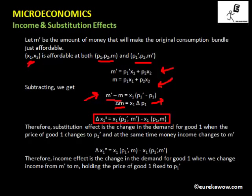The income effect is X1(P1 dash, M) minus X1(P1 dash, M dash). If you look at the Slutsky budget line and the final budget line, both are parallel to each other. As a result, the relative prices do not change — the price of good one remains at P1 dash and the price of good two is P2. However, income changes from M dash to M. The final budget line corresponds to only a change in the price of good one and no change in income, so it corresponds to prices P1 dash, P2 and income M.